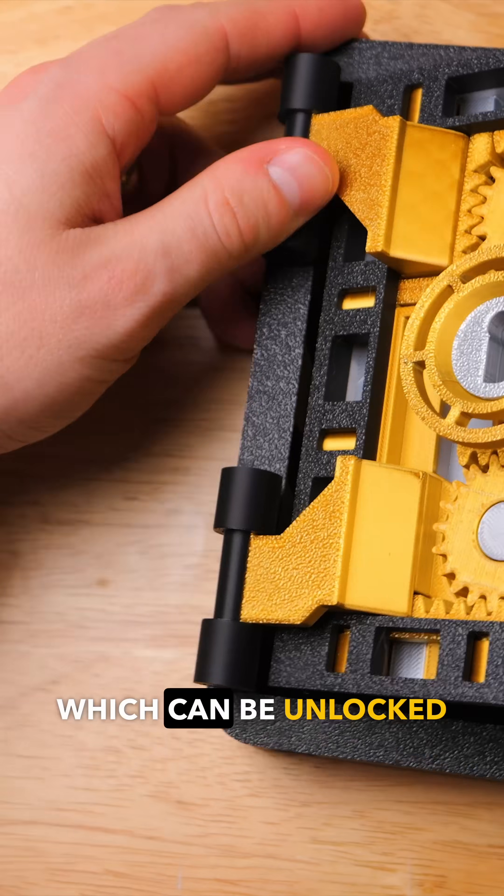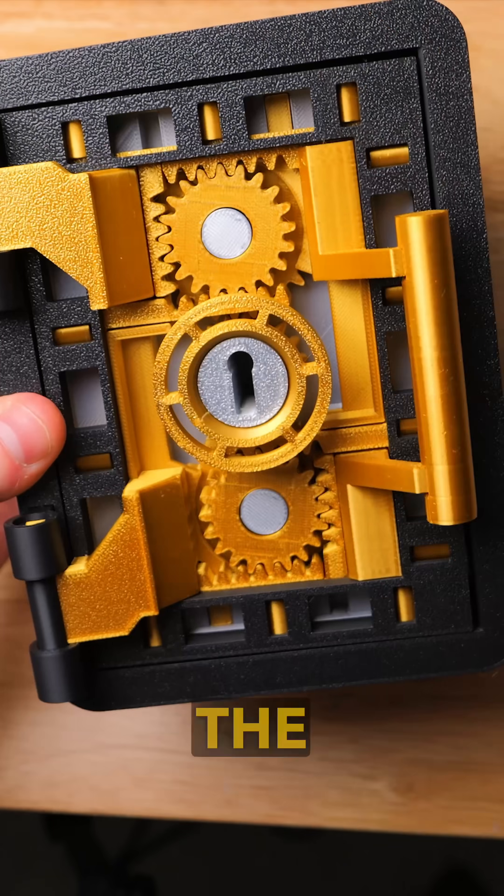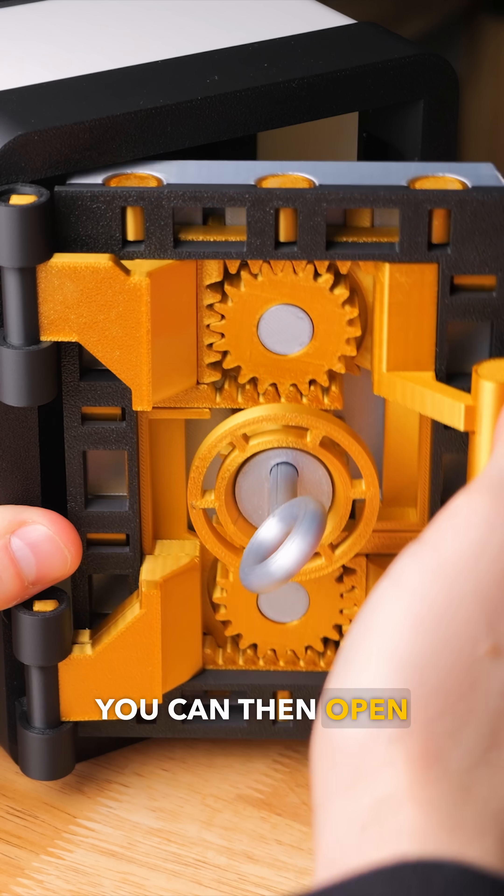Inside is a 3D printed lock, which can be unlocked with the key provided in the file. After the key is turned and you spin the main wheel, unlocking the rack bolts, you can then open the door.